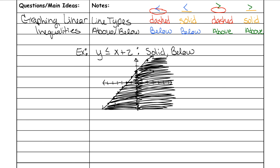You also need to know about possible solutions versus non-solutions. On a test they might give you a point like negative two, four and ask if it's a possible solution. Things in the shaded area are possible solutions. Since this inequality is less than or equal to, even points on the line are possible solutions. Points in the unshaded area are not solutions.